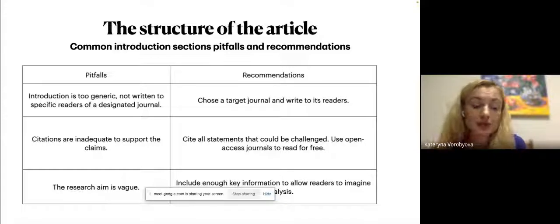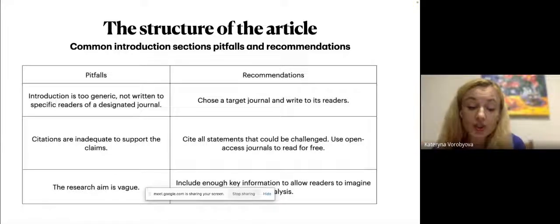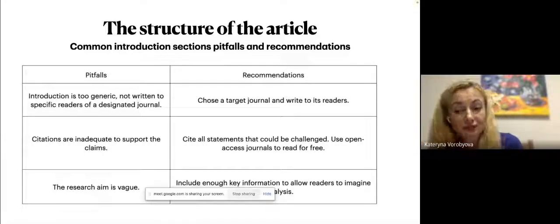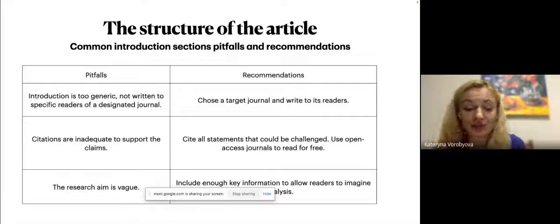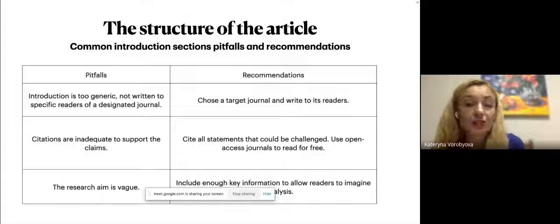And sometimes, especially on the early stage, the researchers aim is vague. So the recommendation could be include enough information to allow readers to imagine the analysis. So be sure that your research aim contains essential details like the population or sample, design, study design, timing. Sometimes researchers using cross-sectional studies, sometimes longitudinal studies, dependent, independent variables, and using such detail.